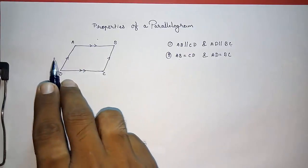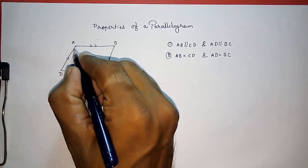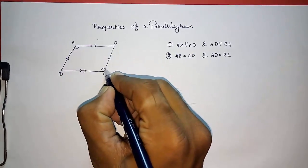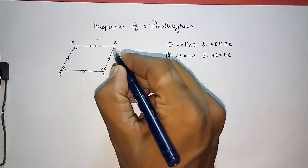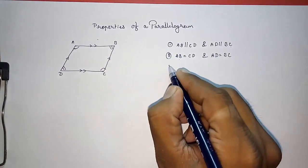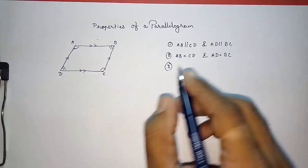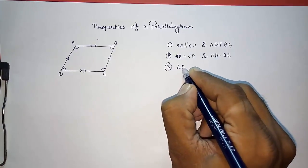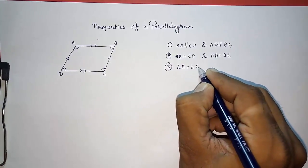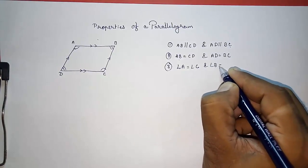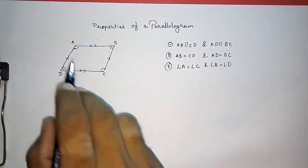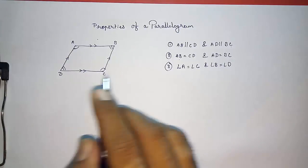The third property: opposite angles are equal, which means angle A is equal to angle C and angle B is equal to angle D. Both pairs of opposite angles are equal.